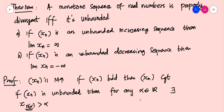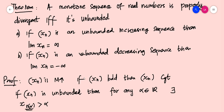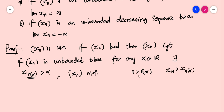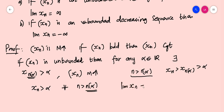Since the sequence is unbounded, for any real number alpha, there exists a particular index N_alpha such that XN_alpha is greater than alpha. Also, XN is monotonic increasing, so for all N greater than N_alpha, XN is greater than XN_alpha, which is greater than alpha. Therefore, XN is greater than alpha for all N greater than N_alpha, which means the limit of XN equals plus infinity.